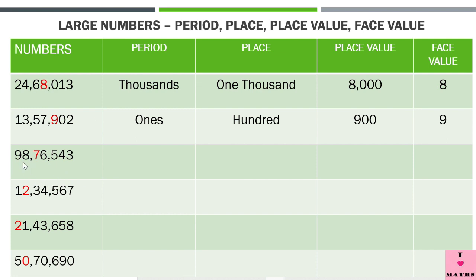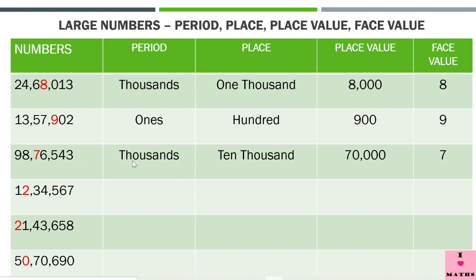Let us move to the third number: 98 lakh 76,543. Here 7 has been highlighted. The digits 543 are in the ones period. The next period is the thousands period, and 7 is in the thousands period. The place of 7 is 10,000, the place value of 7 is 70,000, and its face value is 7. Period: thousands. Place: 10,000. Place value: 70,000. Face value: 7.